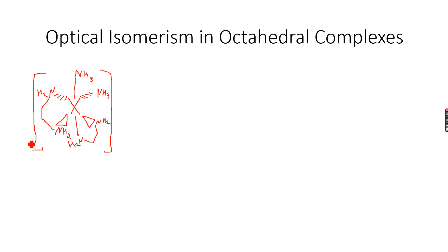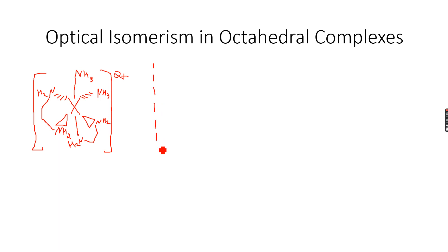So two monodentate ligands, two bidentate ligands. The charge is very important — I didn't make the charge before. Now if I draw a mirror line over here, this is my mirror line, and I make an optical isomer for this complex.